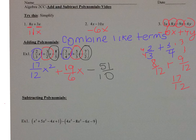When you subtract polynomials, the super important thing — a lot of people forget this — is to distribute the negative one. Write that down. And then you combine like terms.